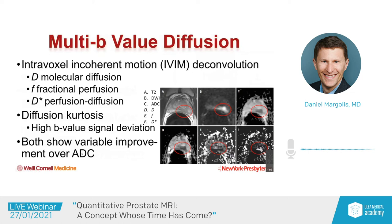In this study, we found that the molecular diffusion component provided added value over the ADC. But there are a number of publications, including from some other excellent institutions in New York City, that don't show improved performance over ADC. So we're still learning about how to acquire and analyze these components.